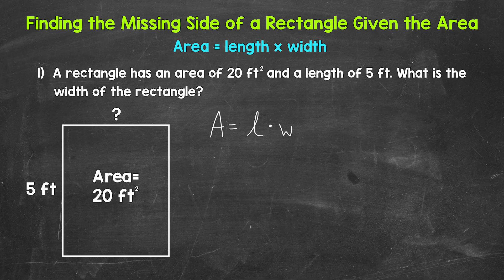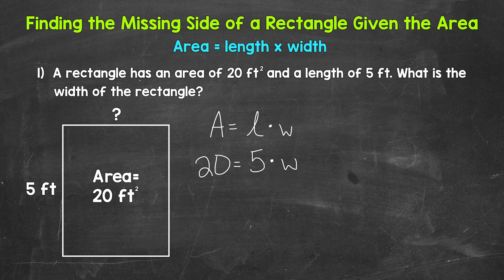Our area is 20 square feet, so plug in 20 for the area. The length is five feet, so plug in five for the length. Times the width, which is our unknown — keep the W there, that's our variable. We need to figure out what W, the width, is. We now have 20 equals five times what. For this first example the numbers are simple, so we can use mental math: five times four equals 20. Our missing side, the width, is four feet.